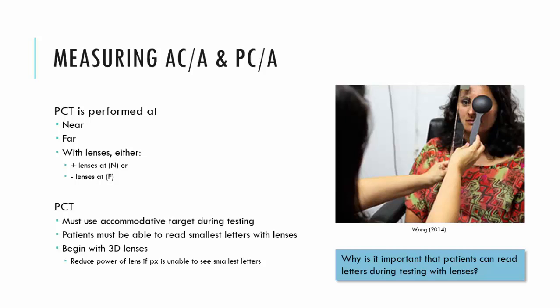If the patient has indeed relaxed their accommodation by three diopters, they should see the letters clearly. If they are struggling to see those letters and they're blurred, then they haven't done the required relaxation. You can give the patient a few moments to see if they can relax their accommodation, and if they can't, you must change the lenses to a lesser power — to plus 2.50, to plus 2.00, and so on. I generally reduce by about half a diopter until the patient is able to relax their accommodation and see the letters clearly.